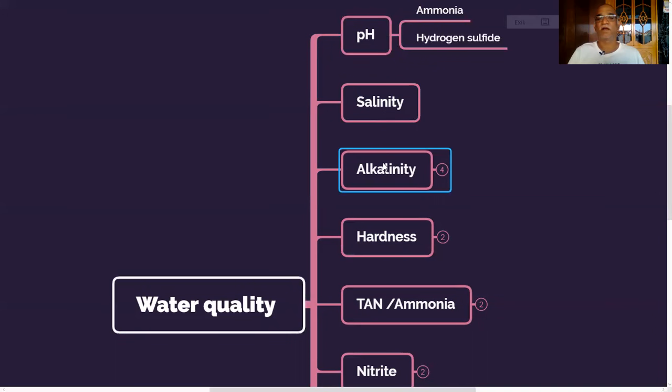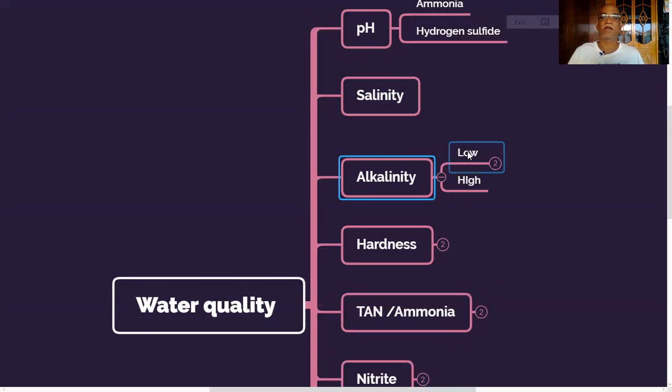Let us come to alkalinity. What is alkalinity? Alkalinity is total amount of titratable bases. In general, it is total of carbonates and bicarbonates. What happens if the alkalinity is low? The pH fluctuations, we call it diurnal fluctuations from morning to evening, will be very high. Higher the pH fluctuations, more the stress on the animal, less the immunity of the shrimp. So it is susceptible to diseases. That is why we should stabilize the alkalinity.